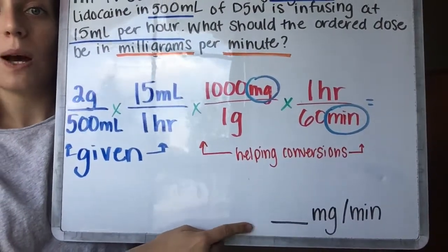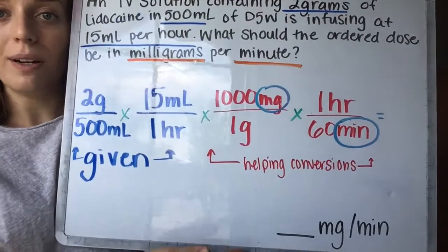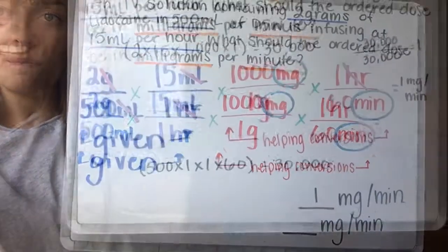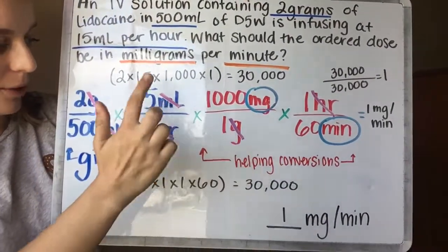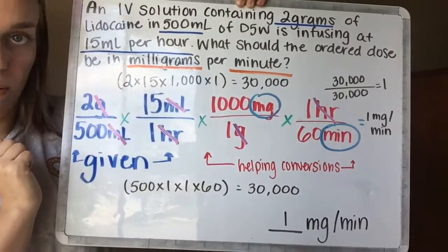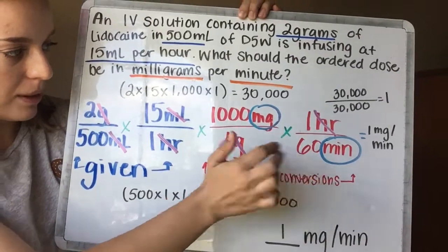All right, so I went through and I crossed them all off. I crossed out my gram for gram, my milliliter for milliliter—we just had to make sure that there was one on the top and one on the bottom—my hour for my hour. And then we were left with milligrams and minutes. We took the numbers and multiplied them straight across.